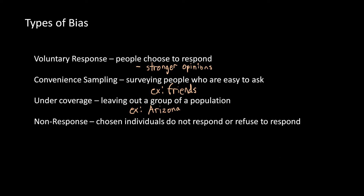The next one is going to be the non-response bias. This is where the chosen individuals do not respond or refuse to respond. For example, if you do a telephone call survey where you phone randomly selected individuals and some of those individuals choose not to respond or refuse to answer your question, that's going to be the non-response bias. That's bad because it limits your sample size, although it doesn't necessarily lead to wrong conclusions — you just can't use that individual anymore for your sample.